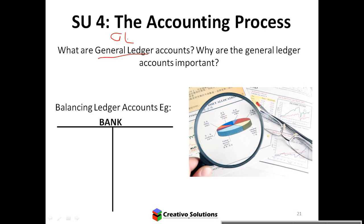Every account is going to have either a debit or a credit depending on what it is. The account most often spoken about is bank, which is one asset of many — we also get other assets like land and buildings, vehicles, and so on. The bank account is going to record debits and credits when we increase or decrease the bank balance.